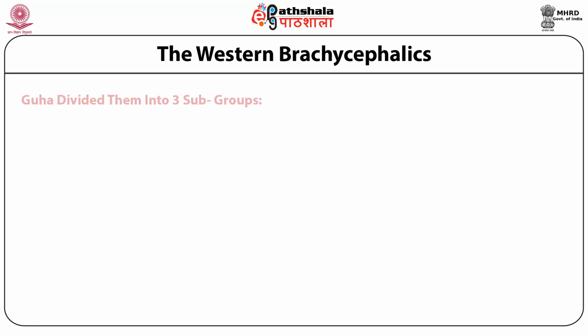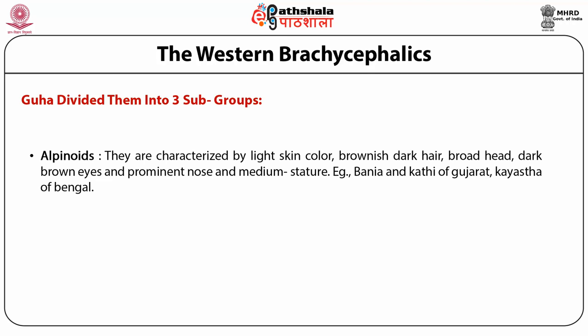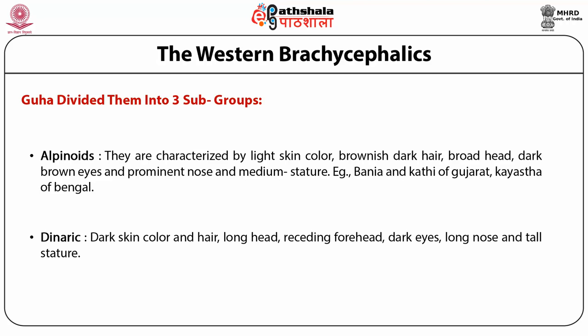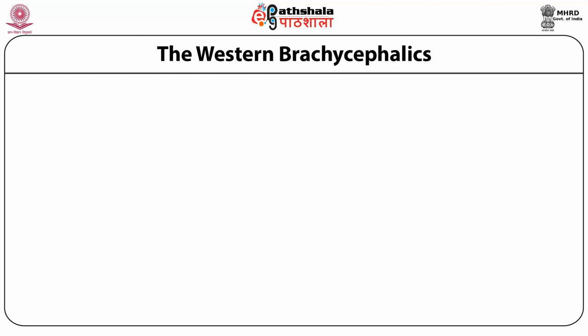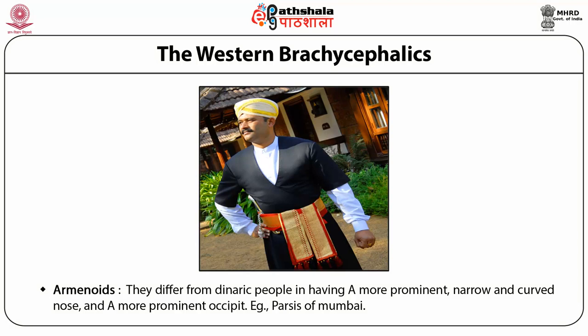Western Brachycephalics are divided into three subtypes: Alpinoid, Dinaric and Armenoid. Alpinoids are characterized by light skin color, brownish dark hair, broad head, dark brown eyes and prominent nose, with medium stature; for example, Banya and Khati of Gujarat, Kayastha of Bengal. Dinarics have darker skin color and hair, long head and receding forehead, dark eyes, long nose and tall stature. Armenoids differ from Dinarics in having a more prominent narrow and curved nose and a more prominent occiput; for example, Parsis of Mumbai.